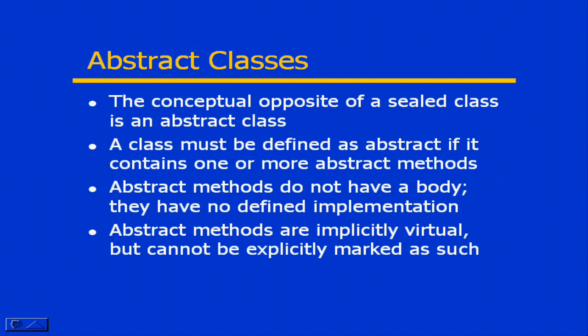An abstract class is really the conceptual opposite of a sealed class. Remember that with a sealed class, what we were trying to do is prevent that class from being subclassed or having another class derived from it. With an abstract class, it's pretty much the other way around. An abstract class is basically defined as such if it contains one or more abstract methods. An abstract method is a method that does not have any implementation.